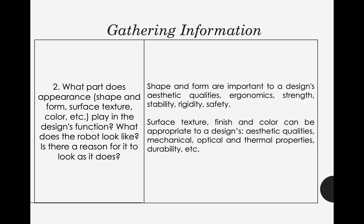Another question: what part does appearance — the shape, the form, the surface texture, and the color — play in the design's function? What does the robot look like, and is there any reason for it to look as it does? We need to take note about the designing part — there is a reason why we are using a particular type of shape or form, whether for aesthetics, quality, or ergonomics.